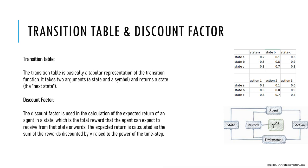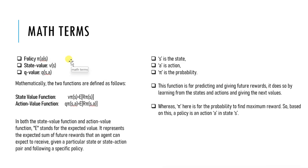Q π(s,a), the action value function, represents the value of performing a particular action a while in state s. V π(s) represents the value of state s. This value is calculated by taking the average over all possible actions from state s — you multiply the value corresponding to performing an action a with the probability of performing that action when in state s, as we have seen in MDP.